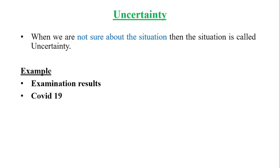Examples for Uncertainty. First, examination results — you are not sure about pass or fail till the results are published. Next example is COVID-19. It is the worst example for uncertainty since we were unaware of the disease till December 2019.